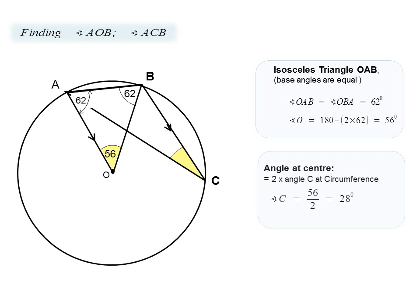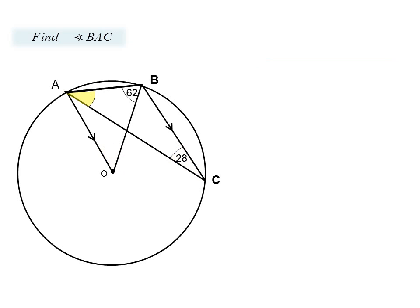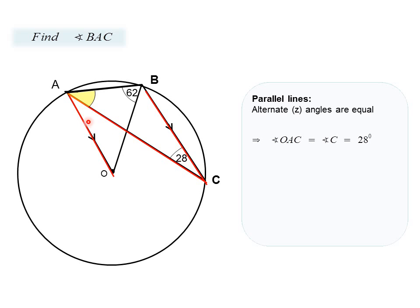We get immediately angle O as 56 degrees. We move immediately into recognizing that angle O at the center will be twice angle C at the circumference. Therefore angle C is half of angle O, which is 28 degrees. For our last angle, we apply the principle of alternate angles. We have a parallel line which results in a Z-angle, and therefore the alternate angle OAC is equal to 28 degrees.